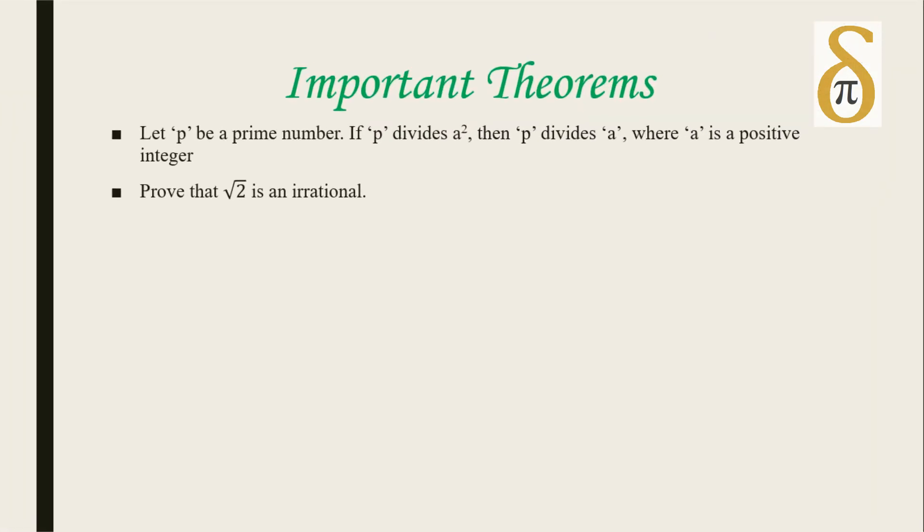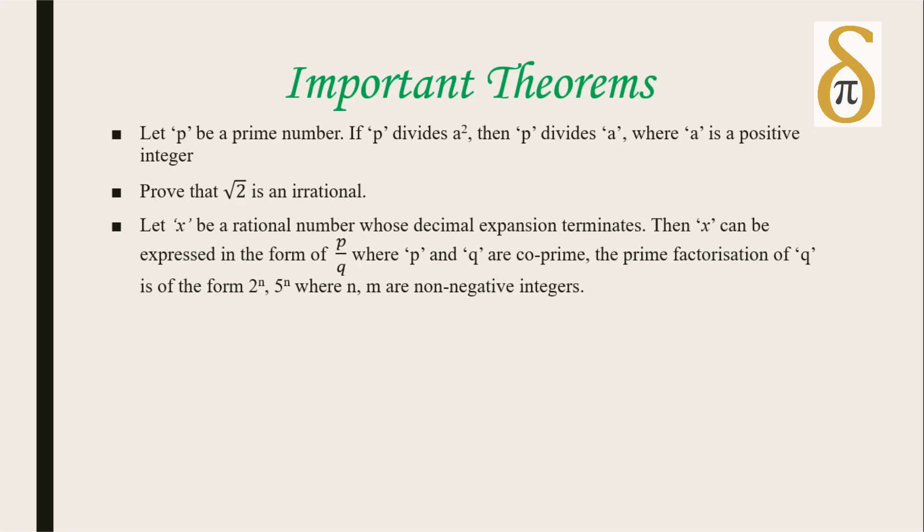The next important theorem you have to remember in this chapter is: Let x be a rational number whose decimal expansion terminates. Then x can be expressed in the form p by q where p and q are coprimes. The prime factorization of q is of the form 2 to the power n times 5 to the power m, where n and m are non-negative integers.